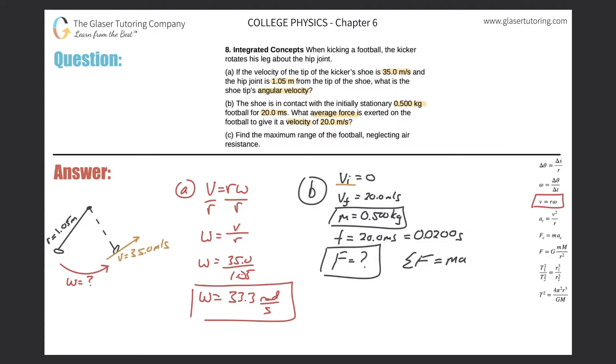You know the initial velocity, the final velocity, and the time. Remember this formula: the final velocity equals the initial velocity plus the acceleration times time. Now all we have to do is plug this in. So it's 20.0 equals zero plus the acceleration times 0.0200. Simply divide this side out by 0.0200.